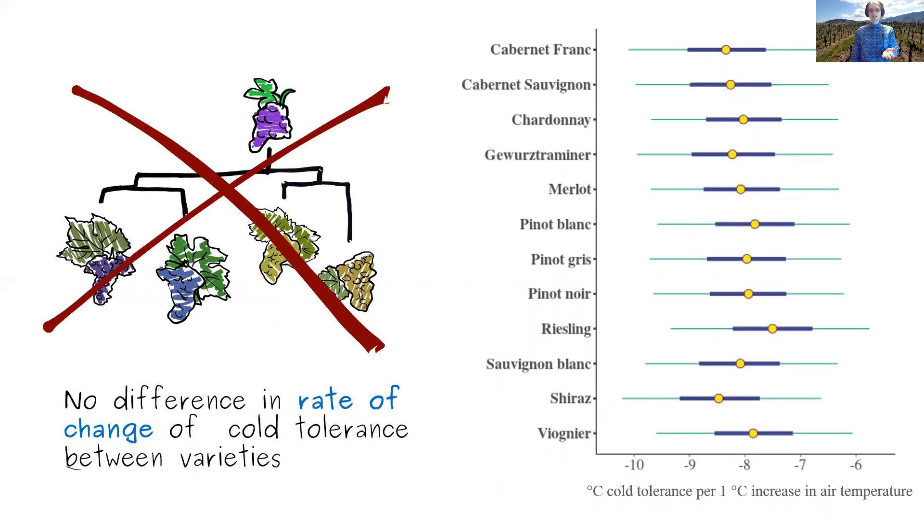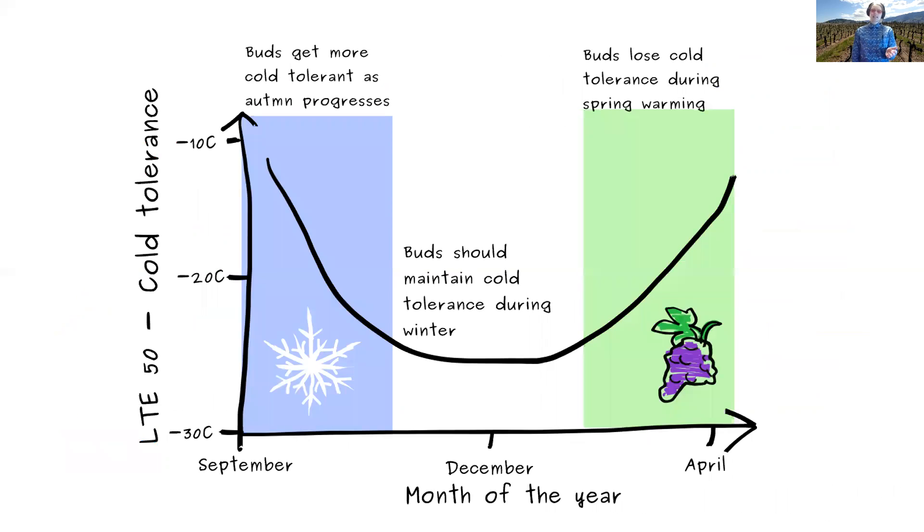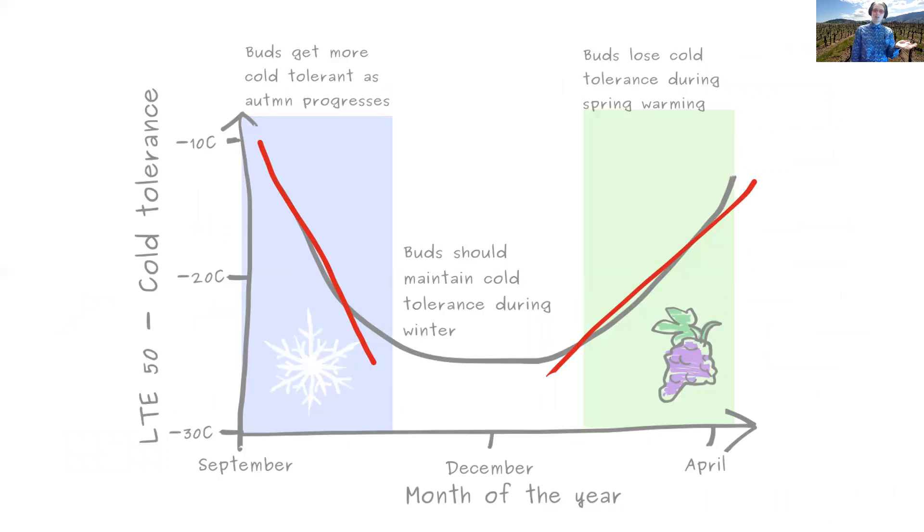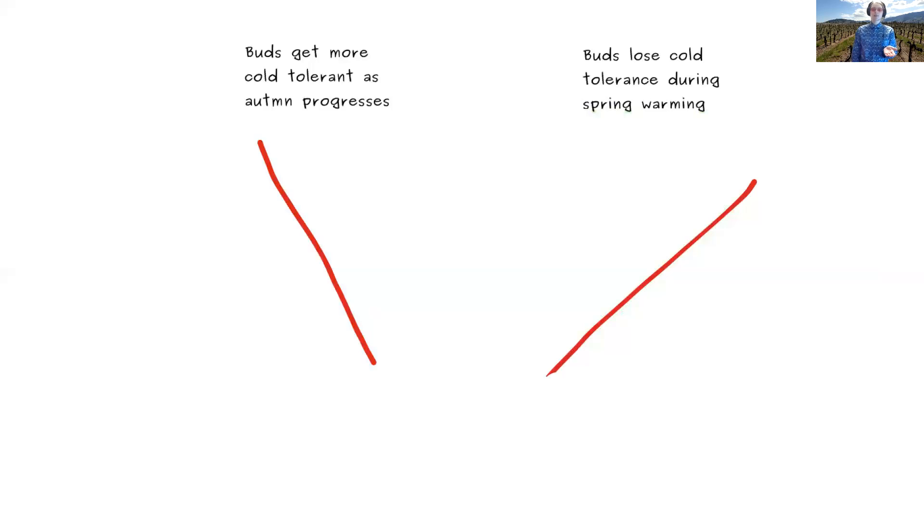But there is a surprise in the model, which suggests we still have a little bit of work to do on it, which is that our models did not detect different rates of change of cold tolerance with different varieties, despite the fact that it found differences in the maximum cold tolerance. And this doesn't make very much physiological sense. But we think this is because our model currently does not differ between gaining tolerance in the autumn and losing it in the spring. So we have two different slopes, potentially. And these two different slopes could be doing quite different things. It might be that the wine grapes all gain tolerance at the same rate, but they lose it at different rates. And by lumping this all together, we're losing this nuance of information.